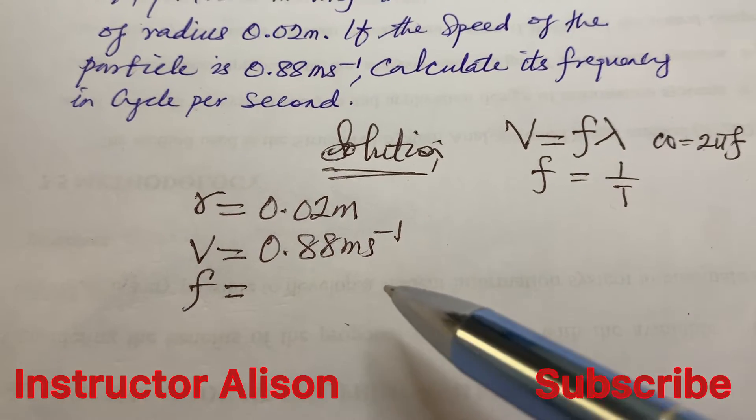So now you're asked to calculate for the frequency. But if you check holistically, there's no relationship between frequency, speed, and also the radius. But we have a relationship between the angular velocity and also the linear velocity.